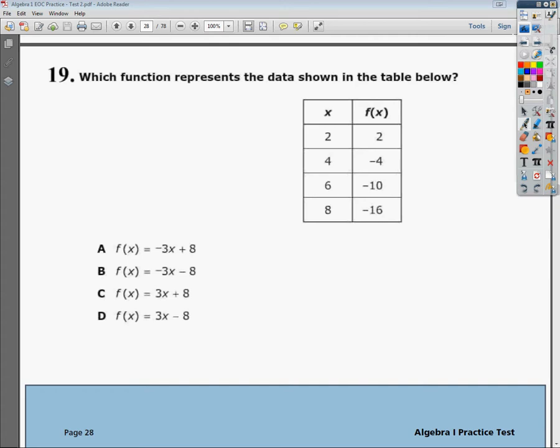What I need to do is figure out if there's any change between each group, and there is. All of these are going up by 2. On the other side, everything is actually going down, and they're all going down 6, so it's linear in relationship.